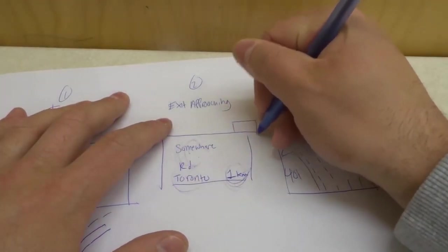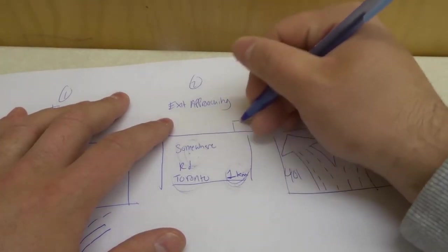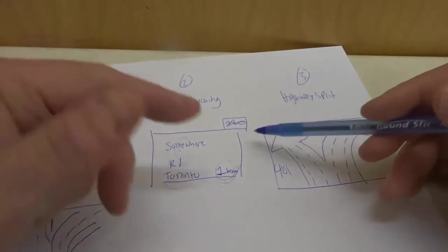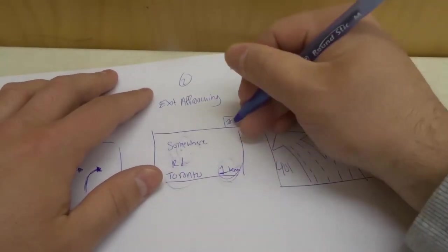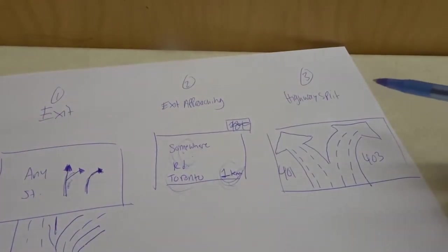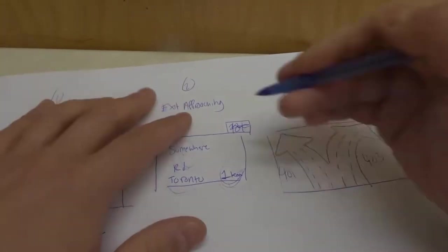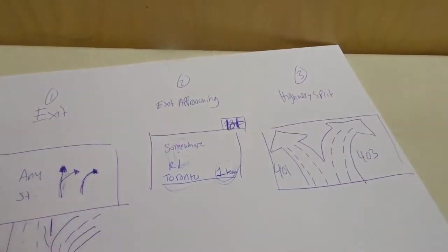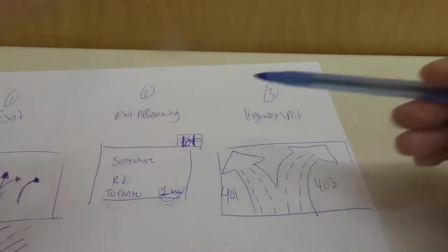Sometimes there might also be a number up here telling you whatever the number is going to be, it tells you that's the exit number. So let's say it's exit number 101. Let's say 101 up there. It's going to tell you whatever the exit is. Let's just write that 101. Let's just say that was the exit number. Sometimes you're going to have that.